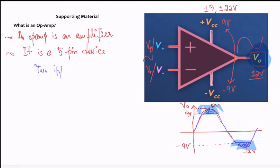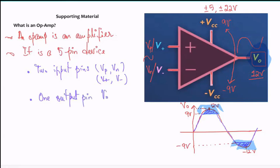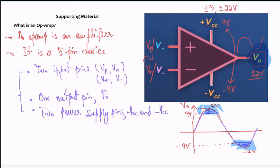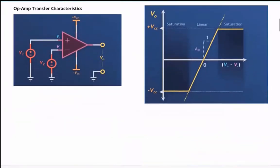So the op-amp is a five-pin device: two input pins — V-plus and V-negative; one output pin — V-naught; and two power supply pins — positive VCC and negative VCC. These combined make five pins. Also note there is no ground pin, so keep that in mind for the lab.